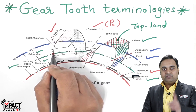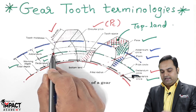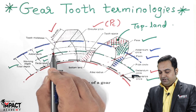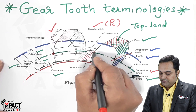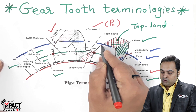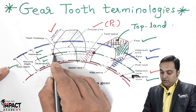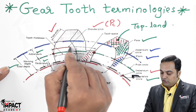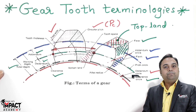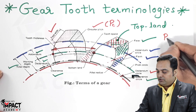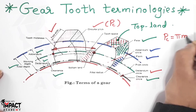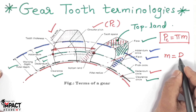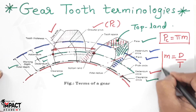Select a point on the pitch circle diameter, then on the next tooth select the point at the same location — for example, on the left profile on the pitch circle diameter. Measure this arc distance along the pitch circle; this is called the circular pitch. Circular pitch is given by the formula π × m, where m is the module of the gear, defined as pitch circle diameter D divided by the total number of teeth.